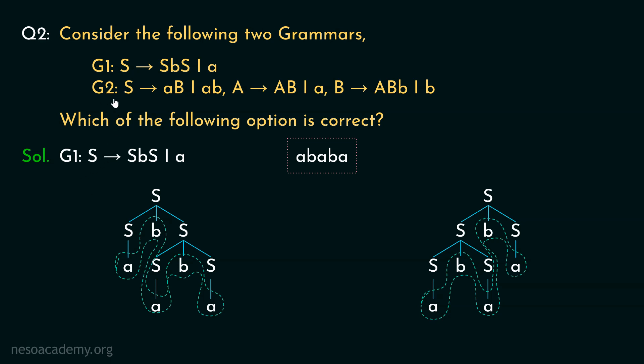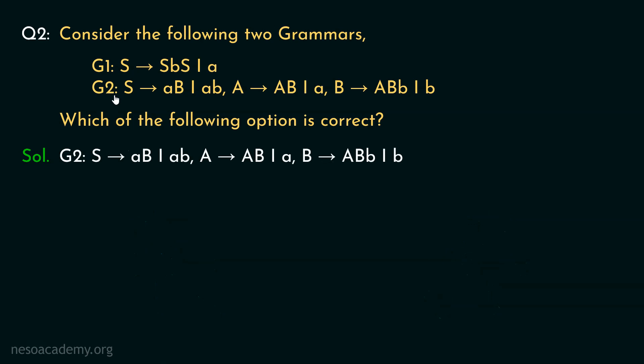Now let's try out G2. So G2 states S can be rewritten as small a capital B or small a small b. Then A can be rewritten as uppercase A, uppercase B or small a. Finally B can be rewritten as uppercase A, uppercase B, small b or small b. Let's try to derive the string ab.